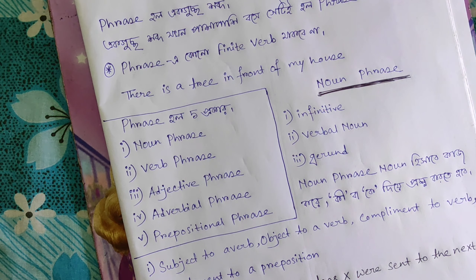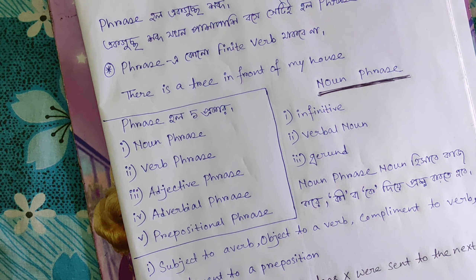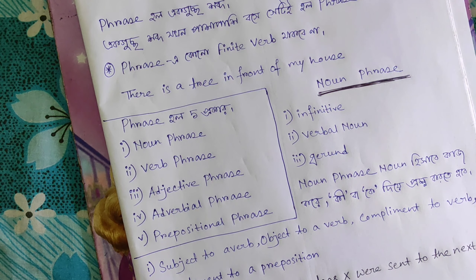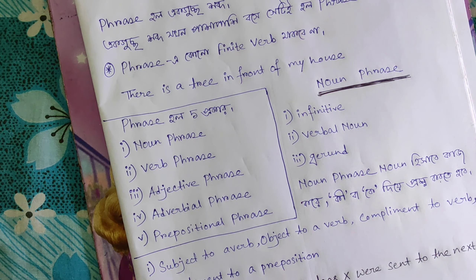For noun phrases, you have to learn three types. Number 1 is infinitive, number 2 is verbal noun, and number 3 is gerund. These three types have been covered in videos on our channel.